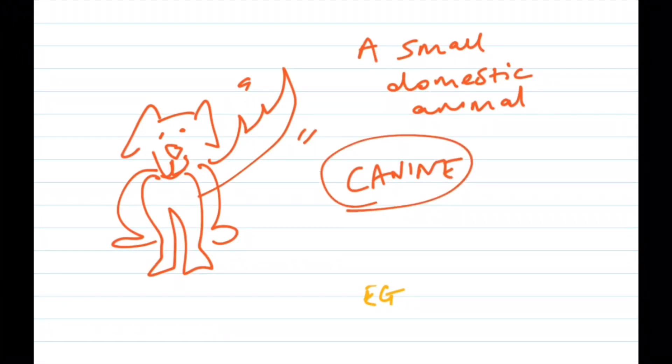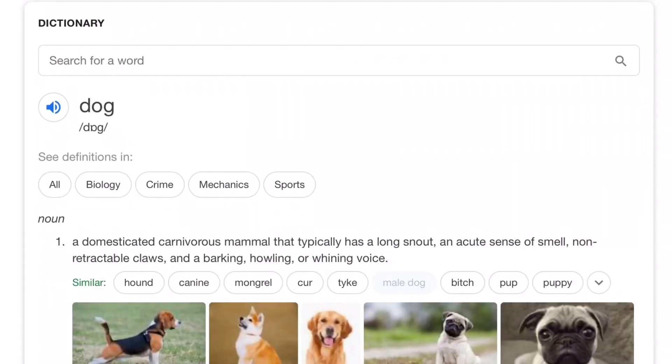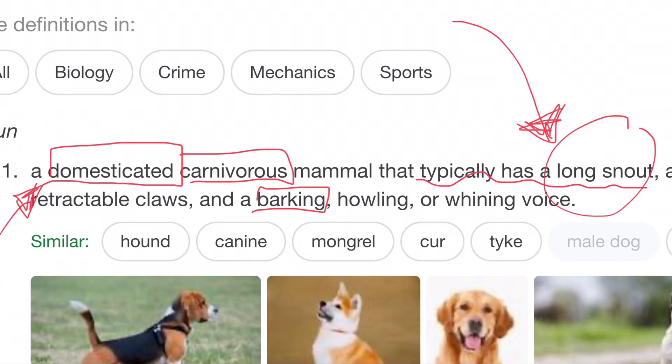So you might start to include some more specific words like canine family, fur. And as we get more specific, we get closer to the Wikipedia definition, at least. But we're not trying to define dog. We're trying to define place.